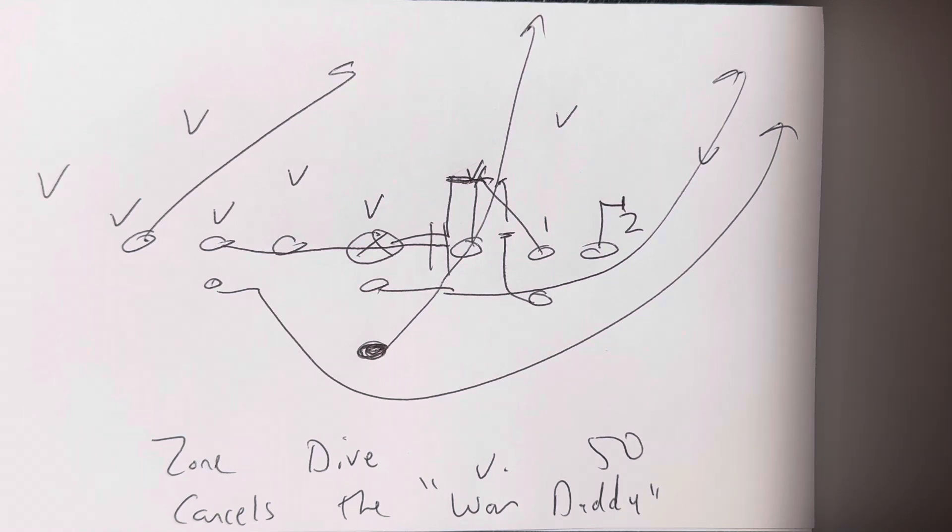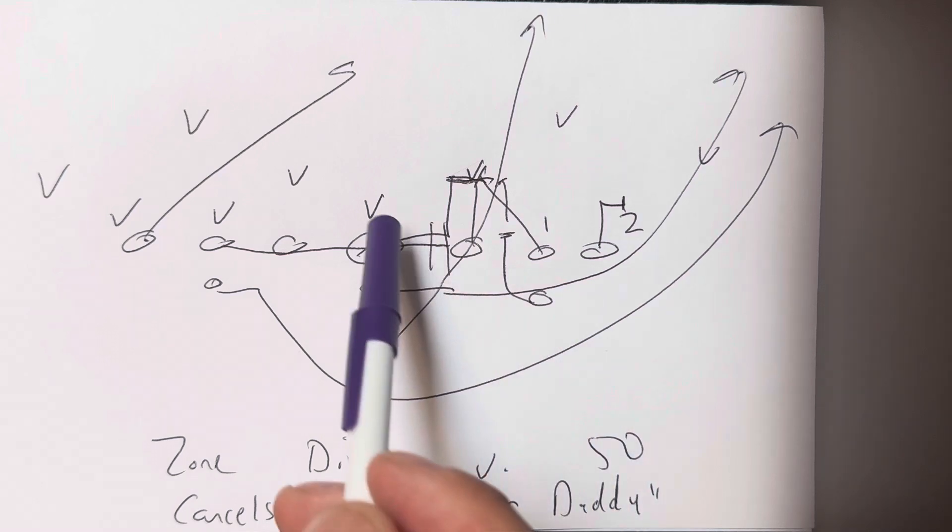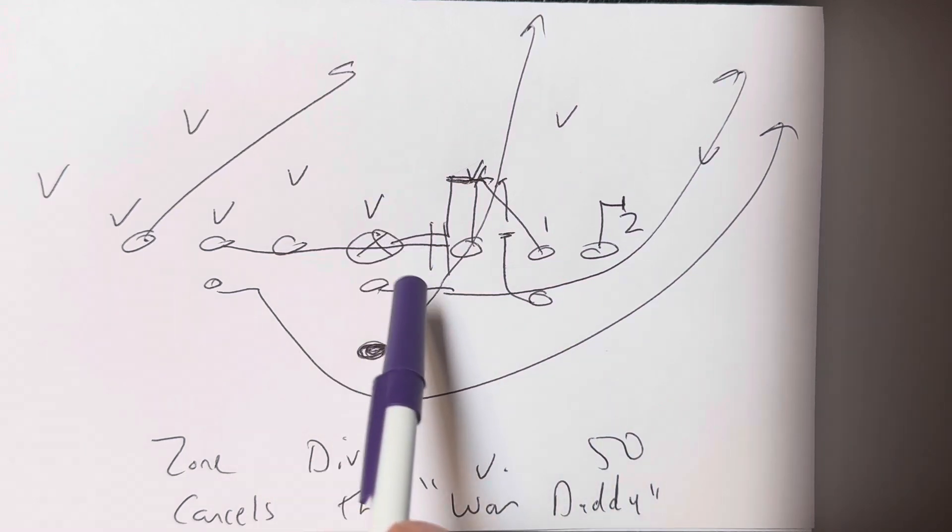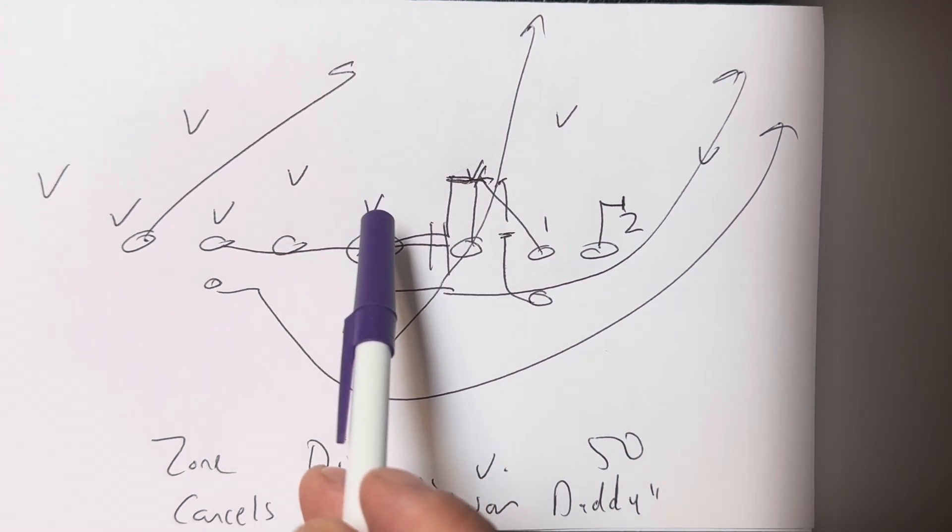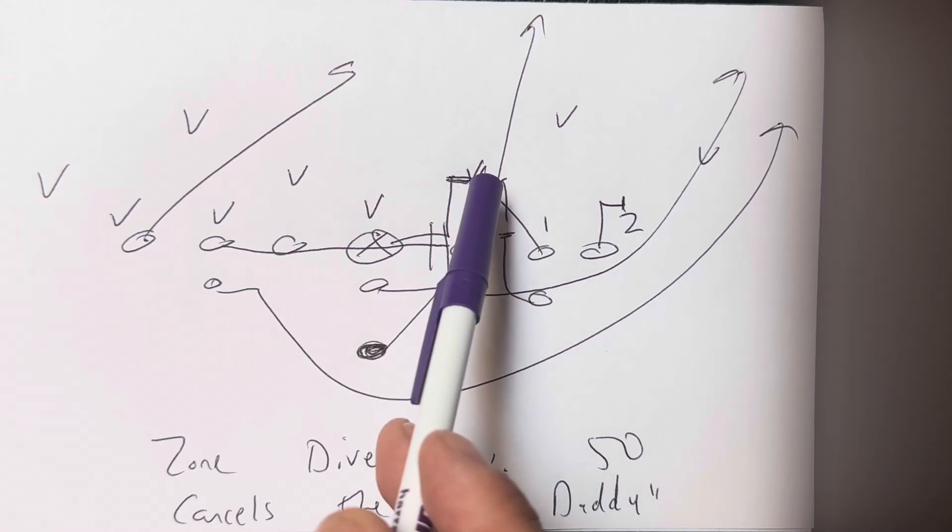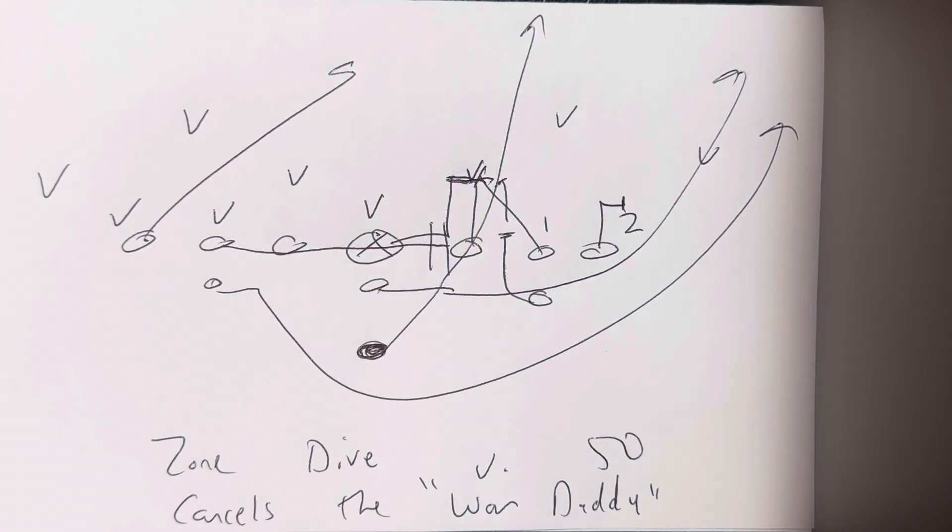And because of that, it caused the biggest amount of problems, because if it was a give-read, what would end up happening is, number one would take the quarterback, the zero would wreck the center, and then either he'd be strong enough to make the tackle, or it allowed the Mike to be free to make the tackle. So, that was what used to happen with the inside veer.